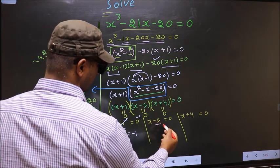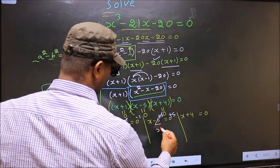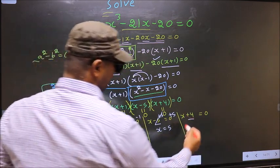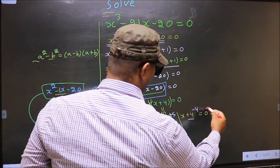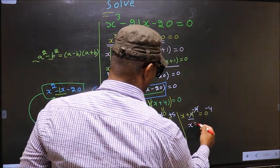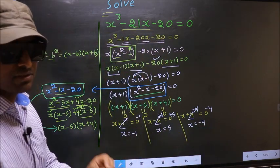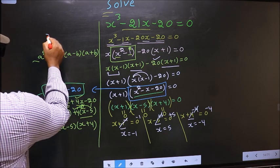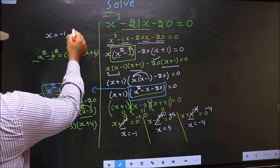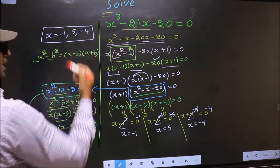From x - 5 = 0, add 5 to both sides, so this cancels out and you get x = 5. From x + 4 = 0, subtract 4 from both sides, so this cancels out and you get x = -4. So the x values that we got are -1, 5, and -4. This is our answer.